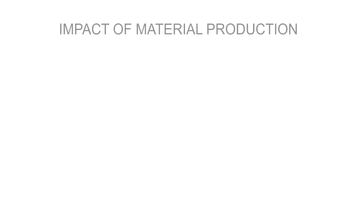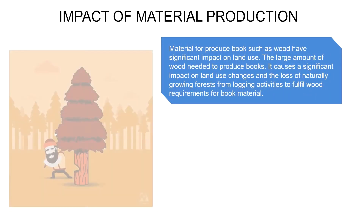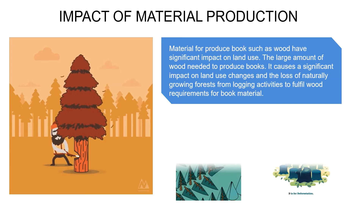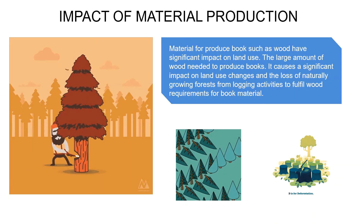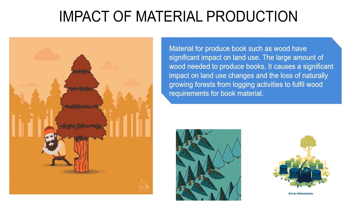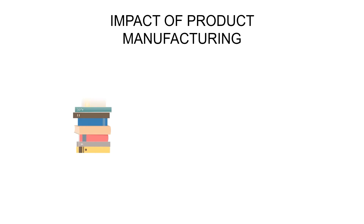Impact of material production: materials used to produce books, such as wood, have a significant impact on land use. The large amount of wood needed causes significant impact on land use changes and the loss of naturally growing forests. Logging activities to fulfill wood requirements for book material manufacturing would seem to be the life cycle sector with the most impact.